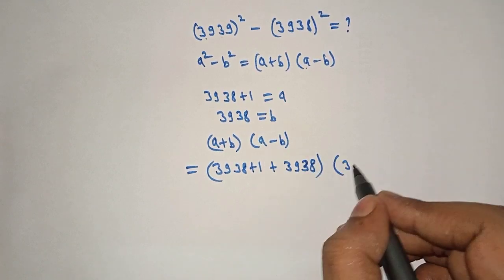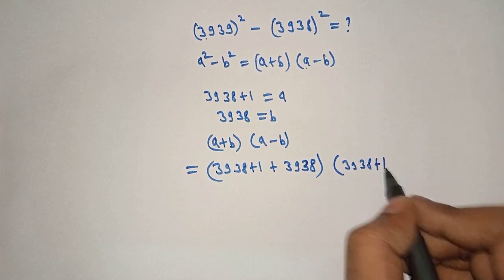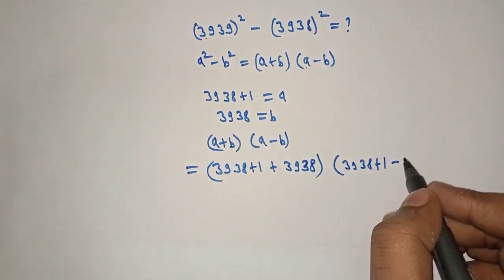Into a, 3938 plus 1, minus b. What is b? 3938.